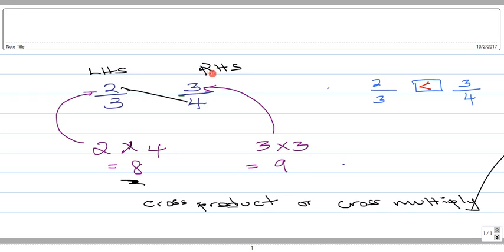We need to find a cross product for the right hand side as well. So we have three and we're going to multiply that with three. So the numerator on the right hand side will be multiplied with the denominator on the left hand side. So we have three times three which would give us nine. Now which is larger, eight or nine? Nine is larger.